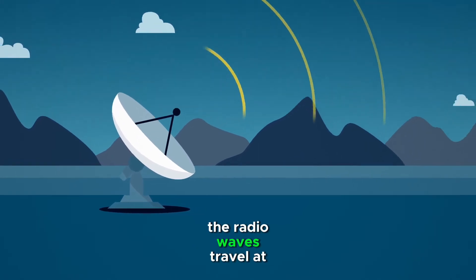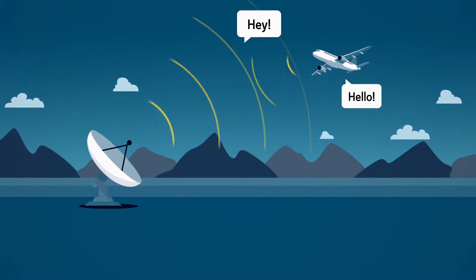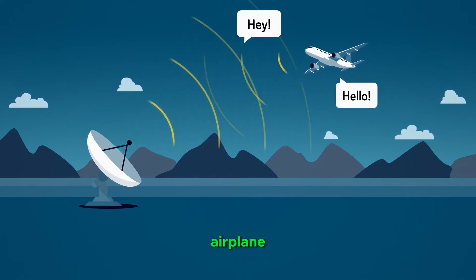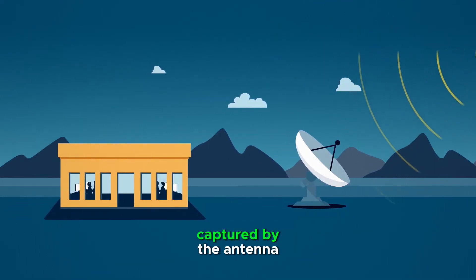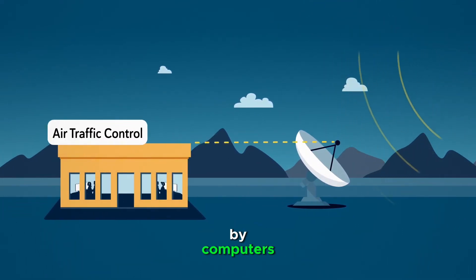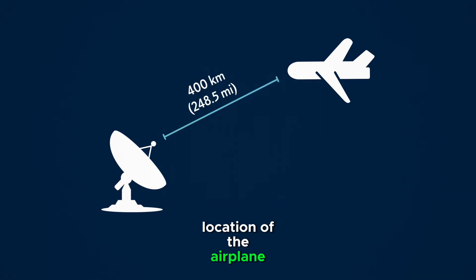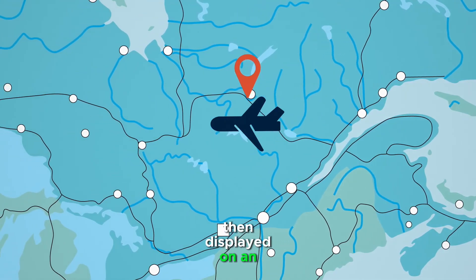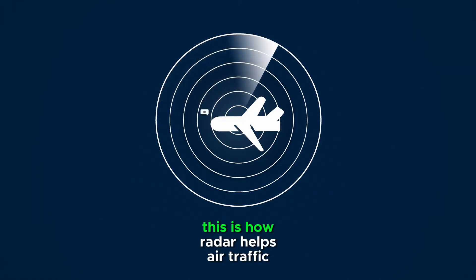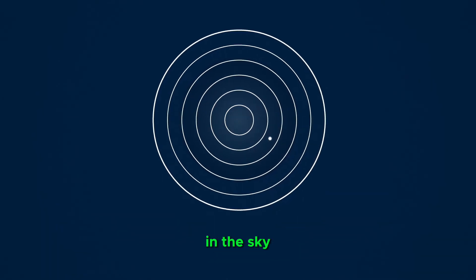The radio waves travel at the speed of light until they hit an object like an airplane. The waves bounce off the airplane and travel back towards Earth. Some of the return waves are captured by the antenna and the data is processed by computers. Based on the strength and travel time of the radio waves, a computer determines the location of the airplane, which is then displayed on an air traffic controller's screen. This is how radar helps air traffic controllers track the location of airplanes in the sky.